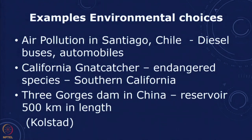In Kolstad's book he talks about three examples of environmental choices. The first example is from Chile — Santiago. Santiago is one of the busiest cities in Latin America and has a severe air pollution problem, and most of this problem is happening because of diesel private vehicles as well as diesel buses. There are many different possibilities.